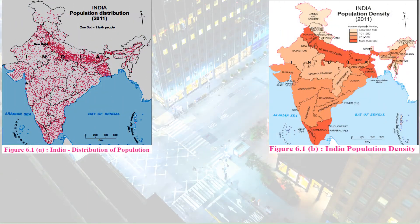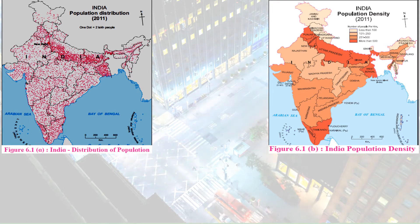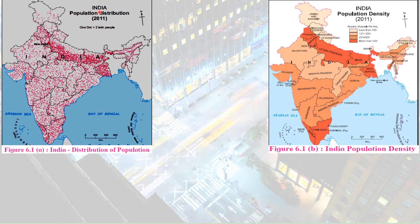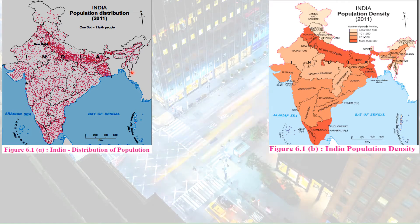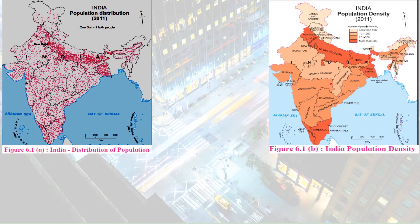Now let's study and compare the population of India and Brazil. On page number 38 of our textbook they have given two maps. In the first map they have used the dot method to show population distribution according to the 2011 census. Census is the counting of people or citizens of a country, done in our country after every 10 years. In the second map they have used the choropleth method to show the density of population.